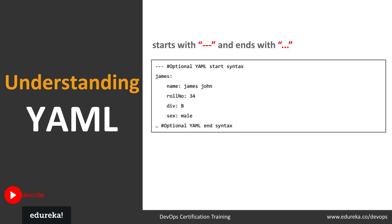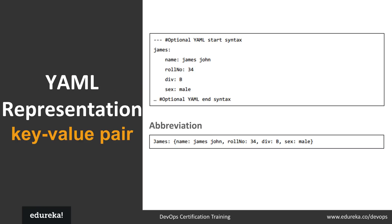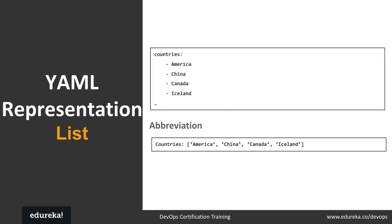Ansible uses YAML syntax for expressing playbooks because it's simple for humans to understand, read, and write compared to other formats like XML or JSON. Every YAML file optionally starts with three hyphens and ends with three dots, as shown on screen. YAML follows a key-value pair pattern — for example, a key 'james' can have values like name 'James John', row number 34, division B, and sex male.